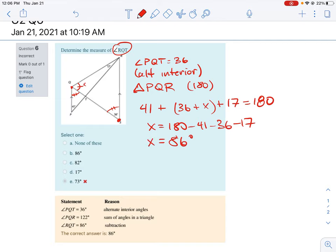So therefore angle X, which is actually angle RQT, which is what we're looking for, RQT is equal to 86 degrees.